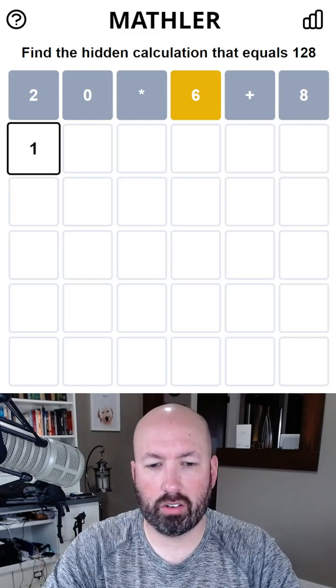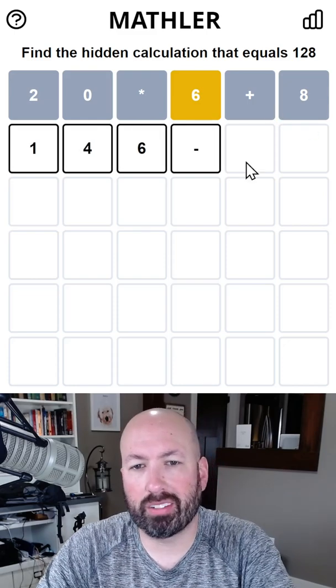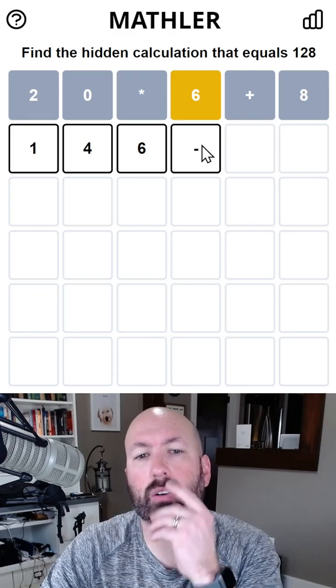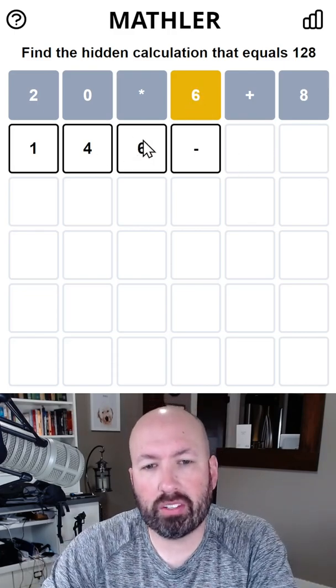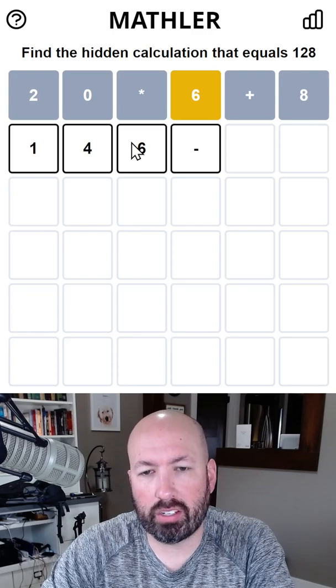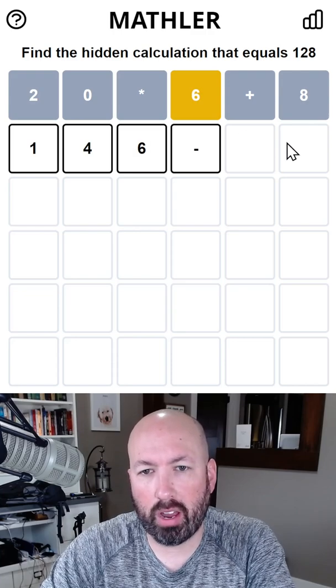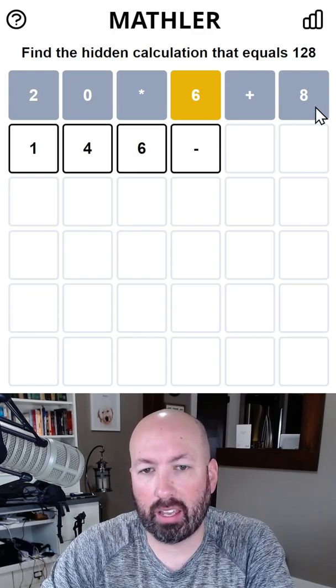It could be something like 146 minus 18, but we can't have an eight. The interesting thing here is, if we put the six as the third digit of the three digit number, whatever we subtract is going to have to end in an eight and we can't have an eight.